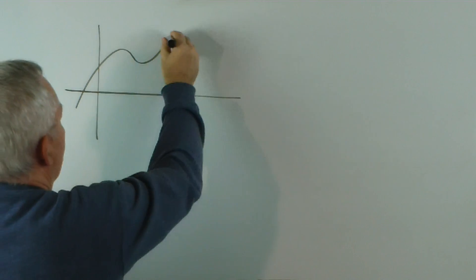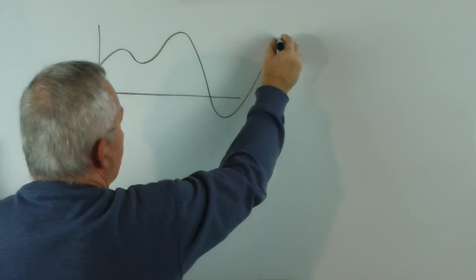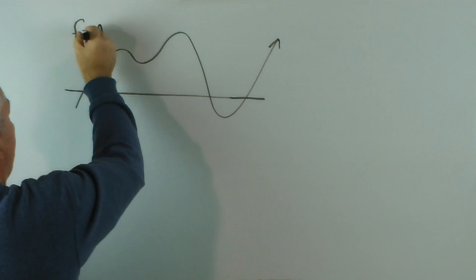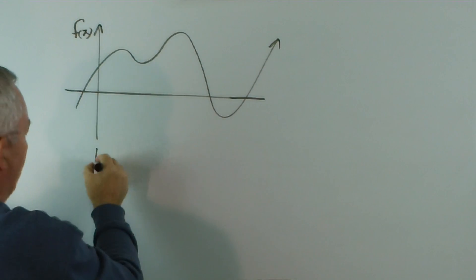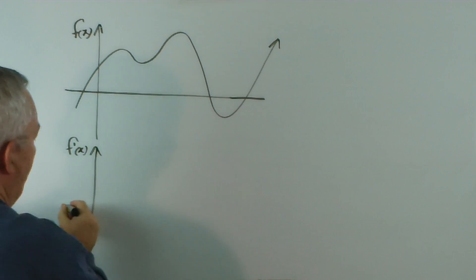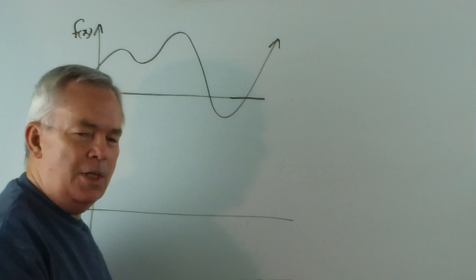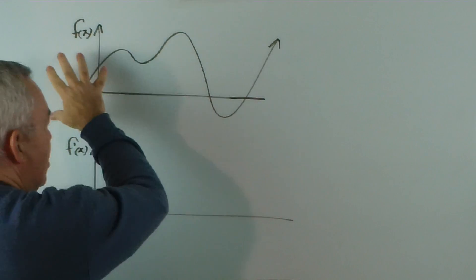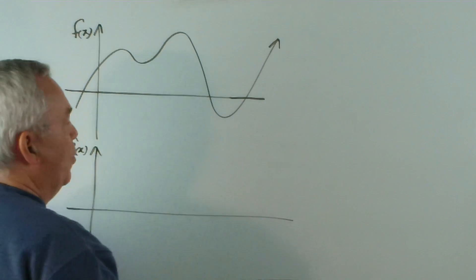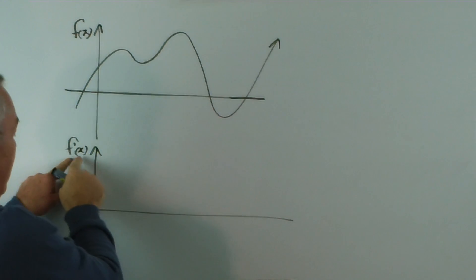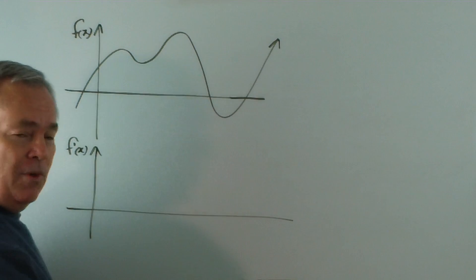If you're given some particular function, like this for example, f, and you're asked to graph its derivative, the traditional expectation is this: we examine this graph to find where its gradient is zero. They're our reference points because the derivative is the gradient function.